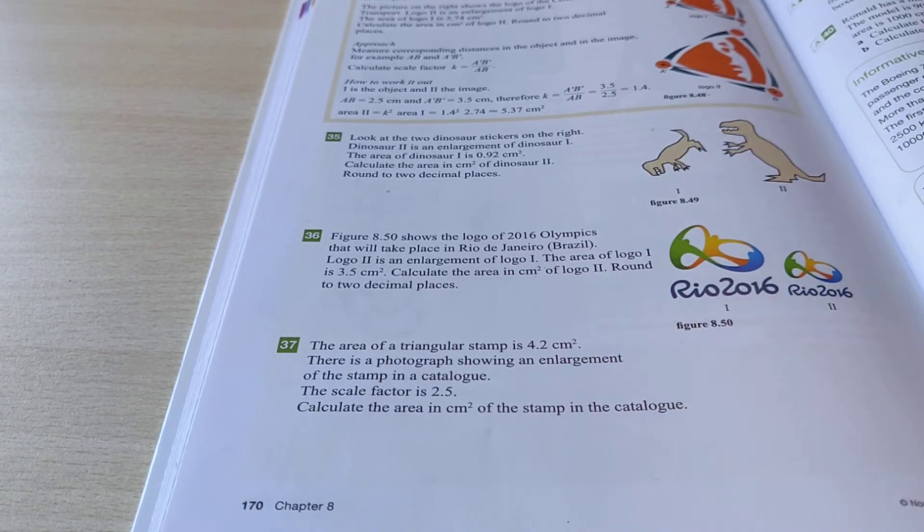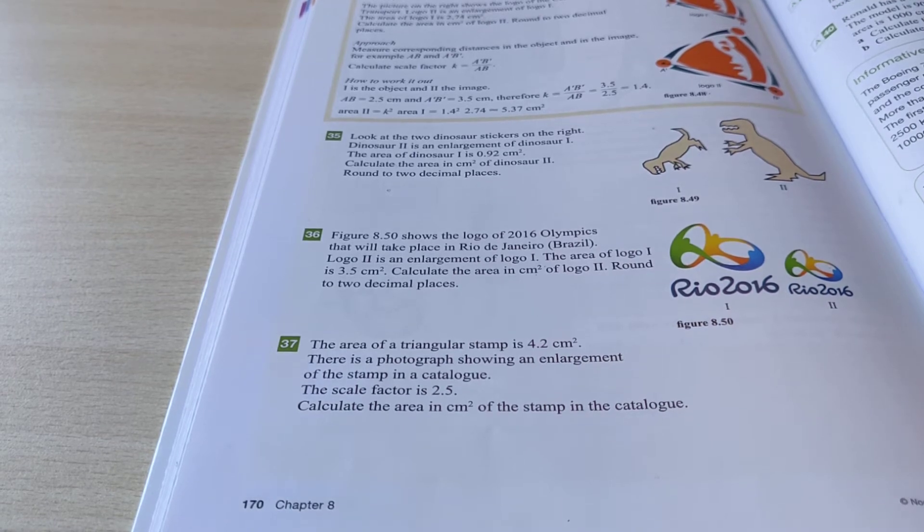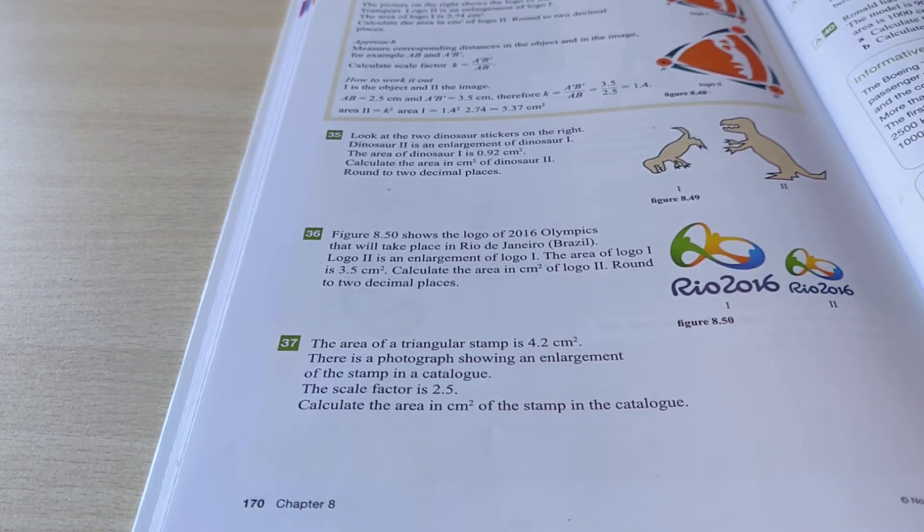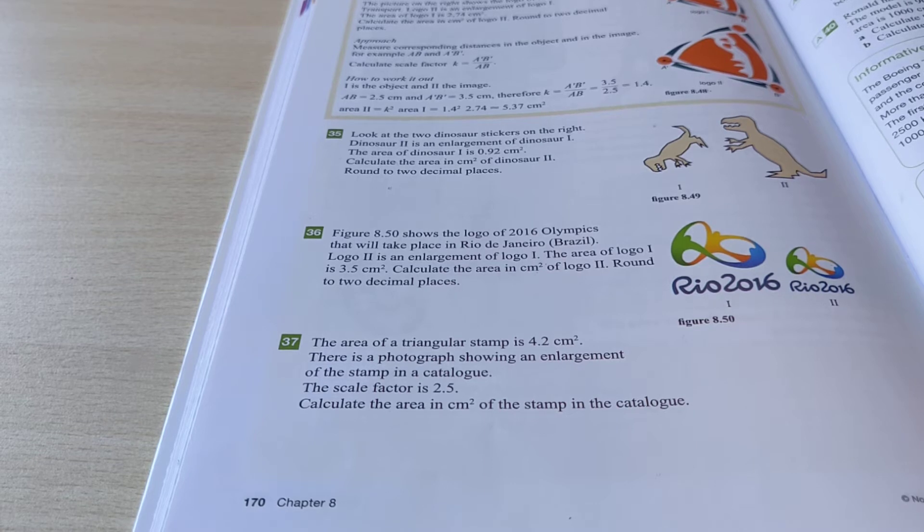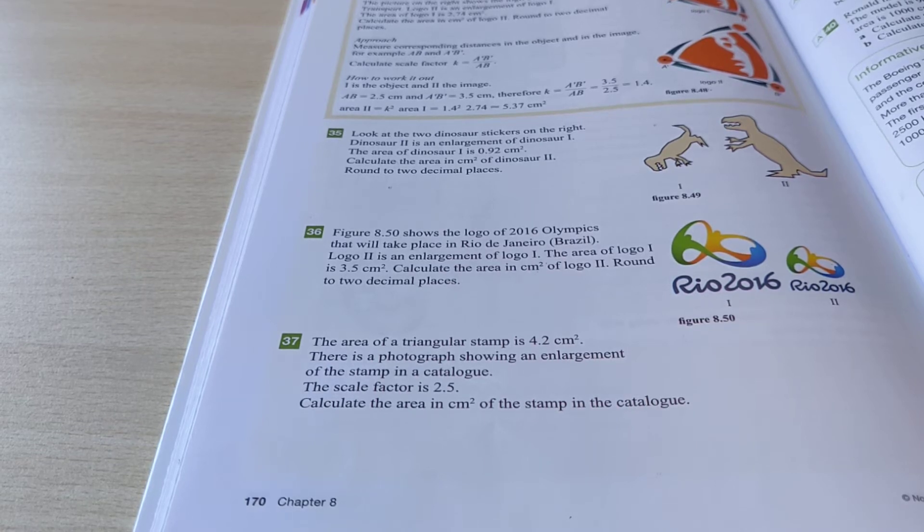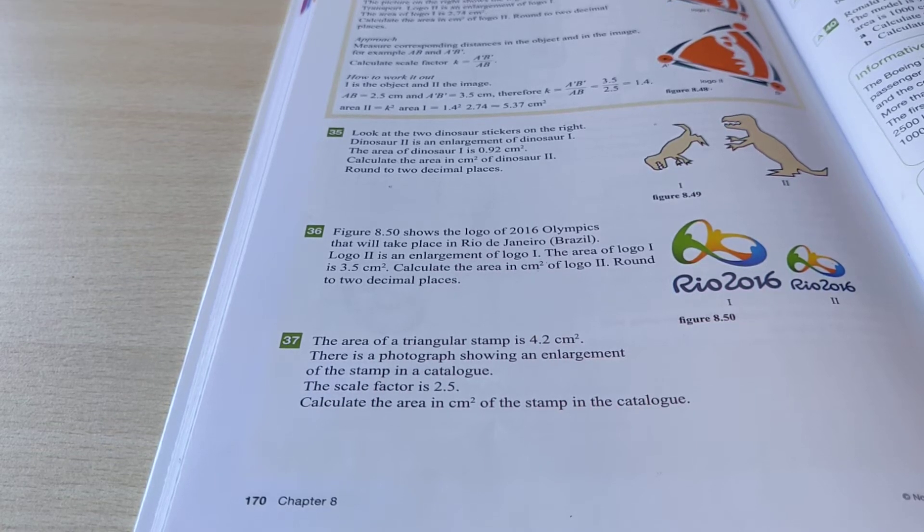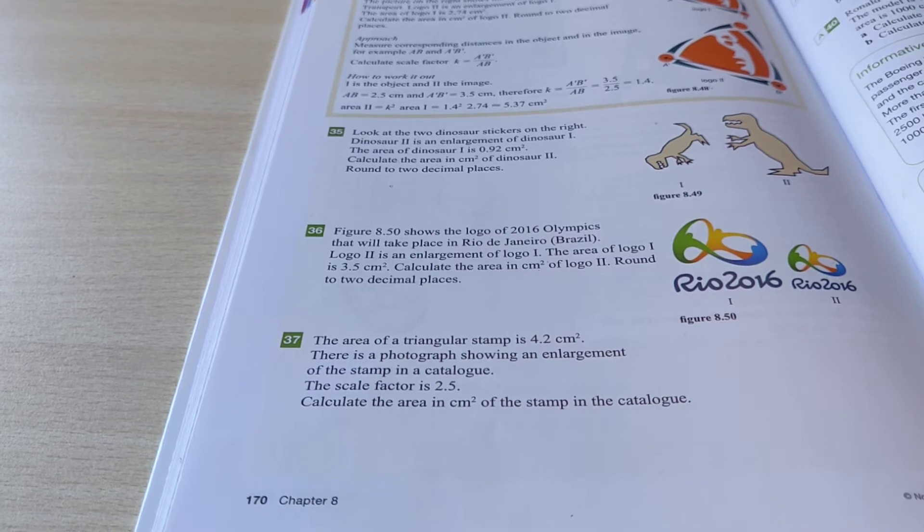This question says the area of a triangular stamp is 4.2 cm². There's a photograph showing an enlargement of the stamp in the catalogue. The scale factor is 2.5. Calculate the area in square centimeters of the stamp in the catalogue.